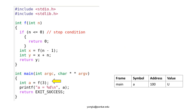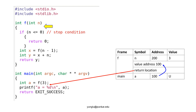Let's start at the main function. This function calls f of 3 and stores the results in a. This is the stack memory when the program is about to call function f. The value of a is unknown right now. This slide shows the stack memory right after entering the function f. The argument is 3. The value address is the address of a in the main function. The return location is the line after calling f.